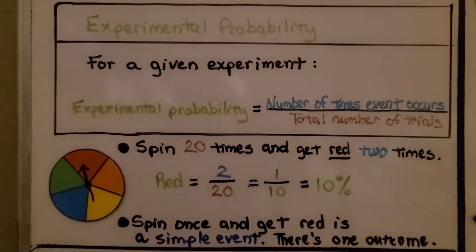So remember, when there's only one outcome for an event, it's called a simple event. So if we spin once and get red, it's a simple event. There's one outcome, red.